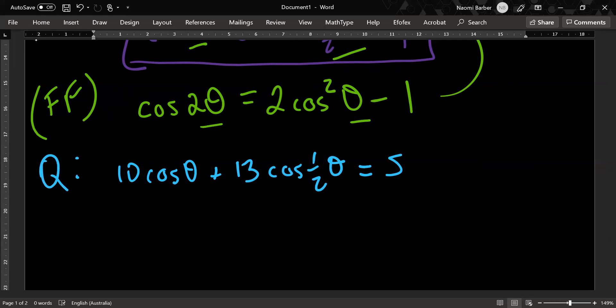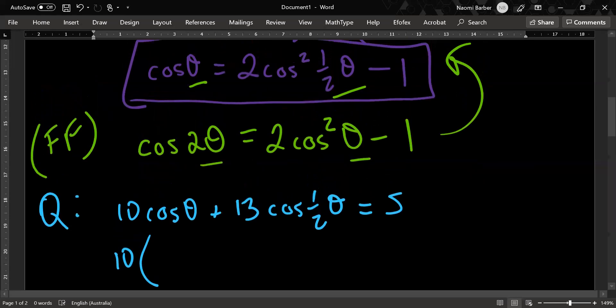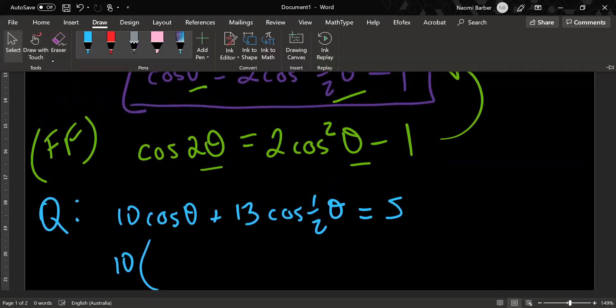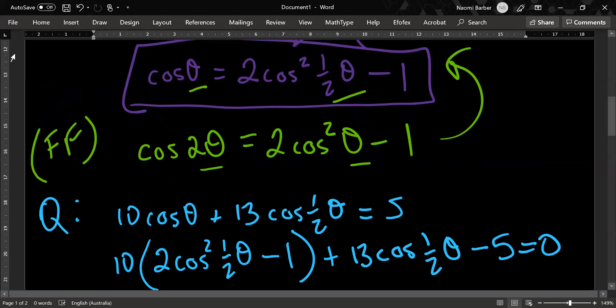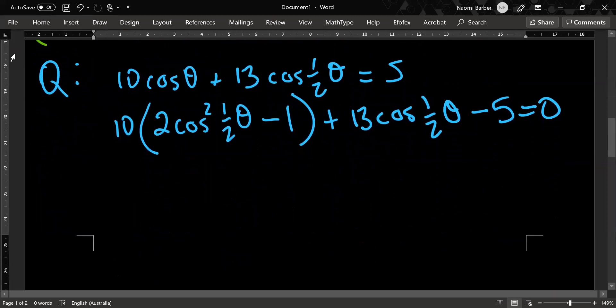I now know that cos theta equals 2 cos squared half theta minus 1. All I've done is substitute in the purple expression for cos theta into my question for cos theta. That's it, plus 13 cos half theta. Then I'm going to move the 5 over in preparation for the ridiculous part of the question, which is going to involve the quadratic formula. Why would you torture a person into doing this and then require the quadratic formula? It's beyond me.